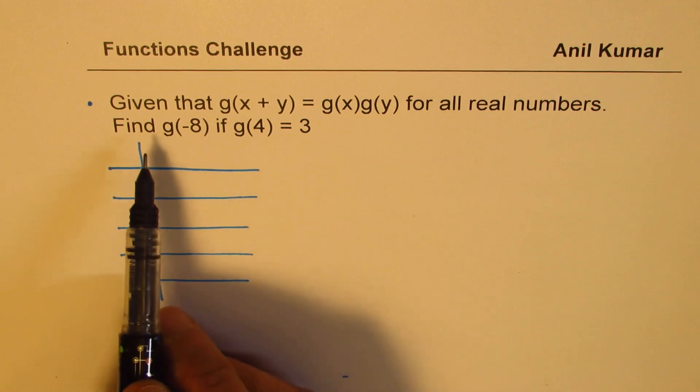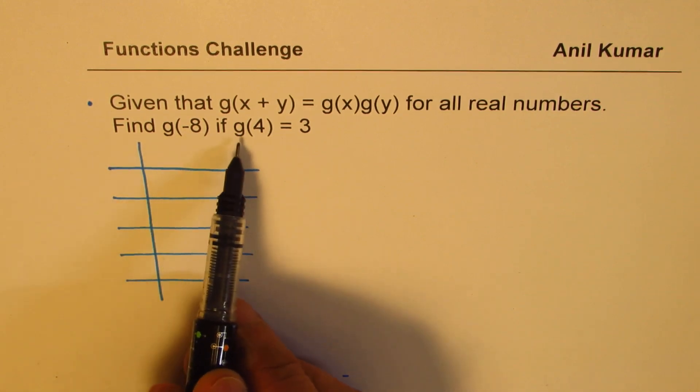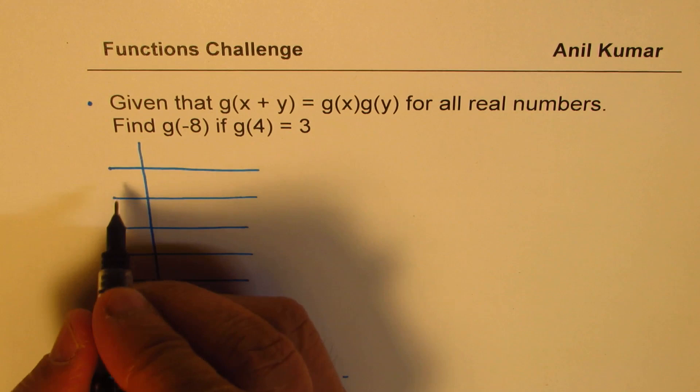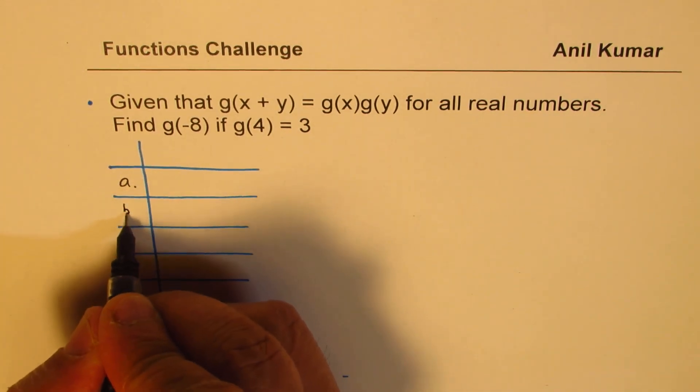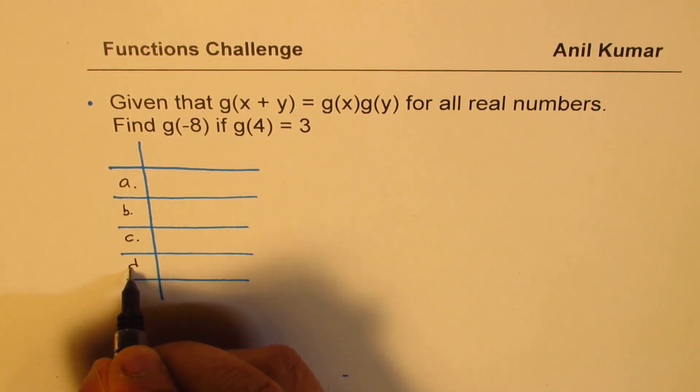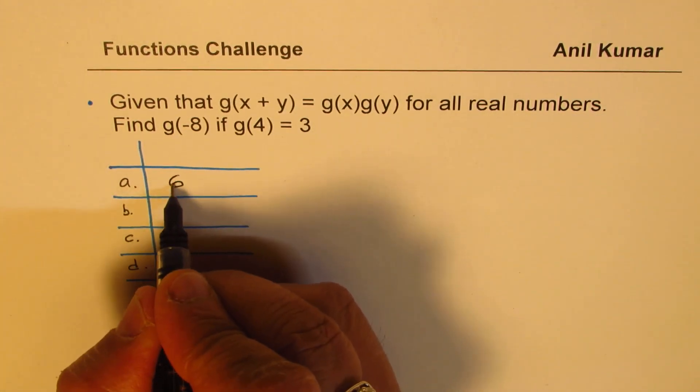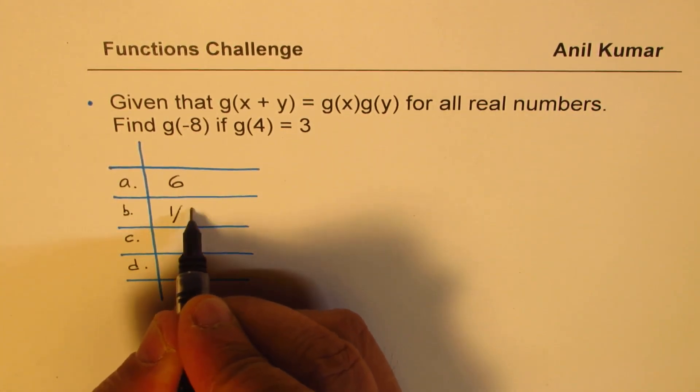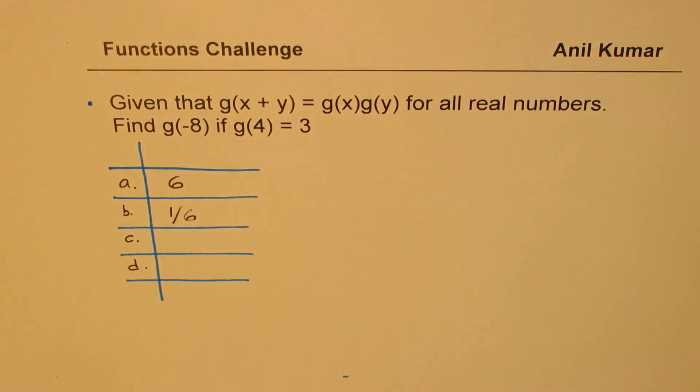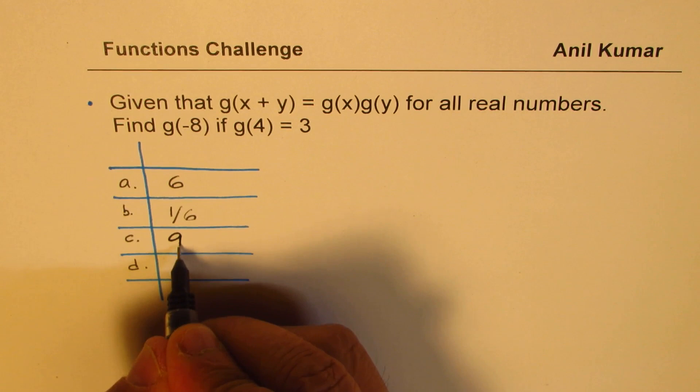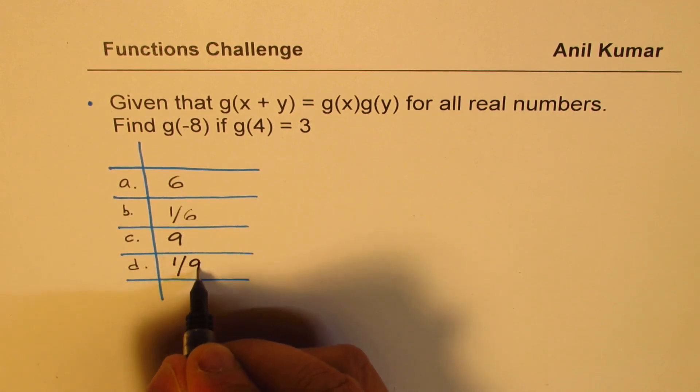We need to find what is g of minus 8. We are given g of 4 as equal to 3, right? The choices A, B, C, and D are, well, it could be 2 times 3, 6, or it could be 1 over 6. It could be 9, or it could be 1 over 9.